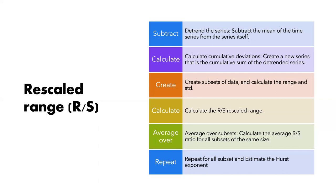We estimate the Hurst Exponent by plotting the log of the average rescaled range against the log of the subset size. The slope of the line of best fit through these points is the estimate of the Hurst Exponent.